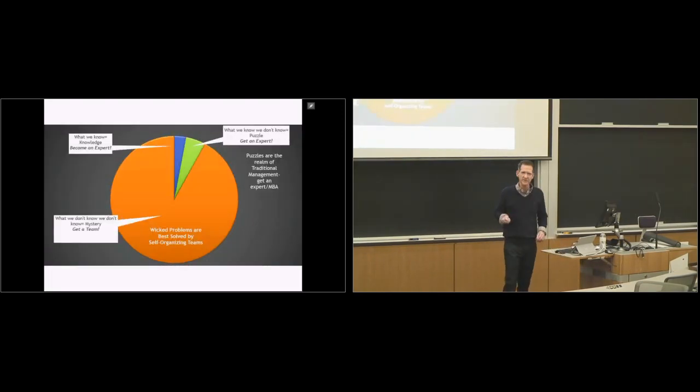If this were everything you knew to be successful in this represented in a circle, I would suggest that the blue slice is what you know you know. It's the knowledge that you bring to it. The green slice is what you know you do not know. And you either learn that or you get an expert for it. And it's complicated, but it's not complex. It's knowable. It's a puzzle.